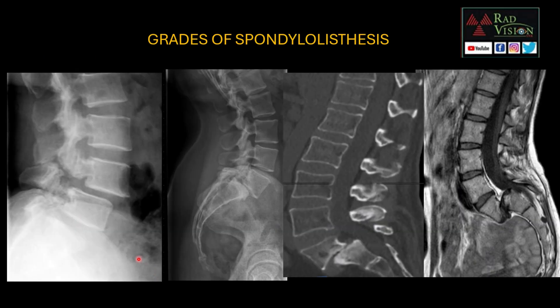Looking at the grades of spondylolisthesis: less than 25% slippage is Grade 1; slippage up to 50% is Grade 2; slippage from 50 to 75% is Grade 3; and slippage up to 100% is Grade 4 spondylolisthesis.